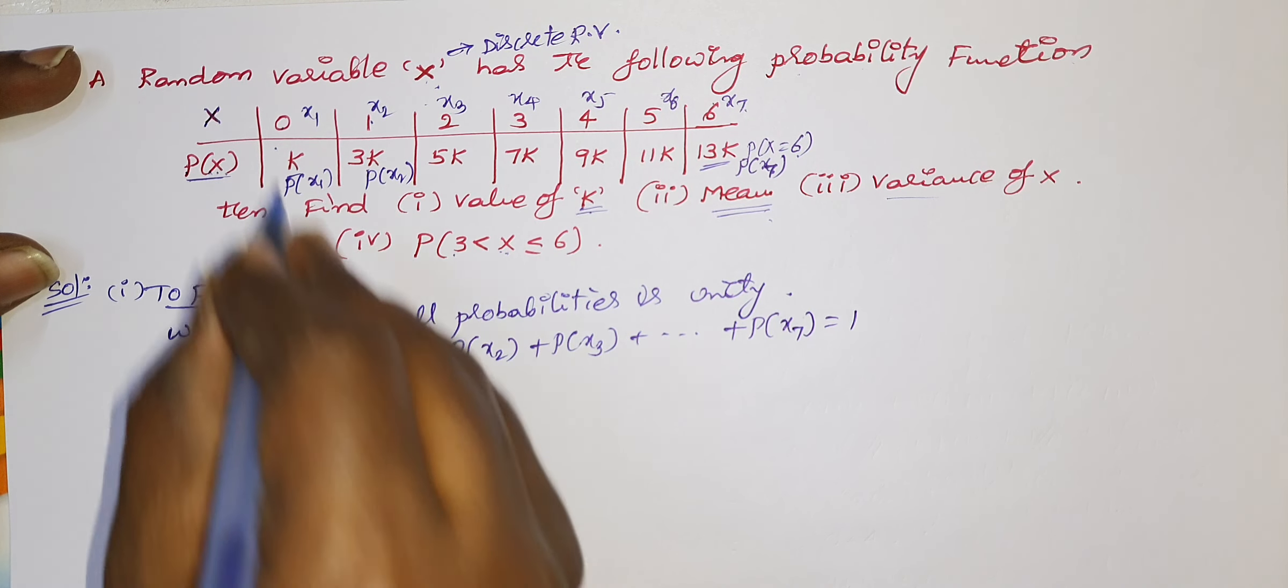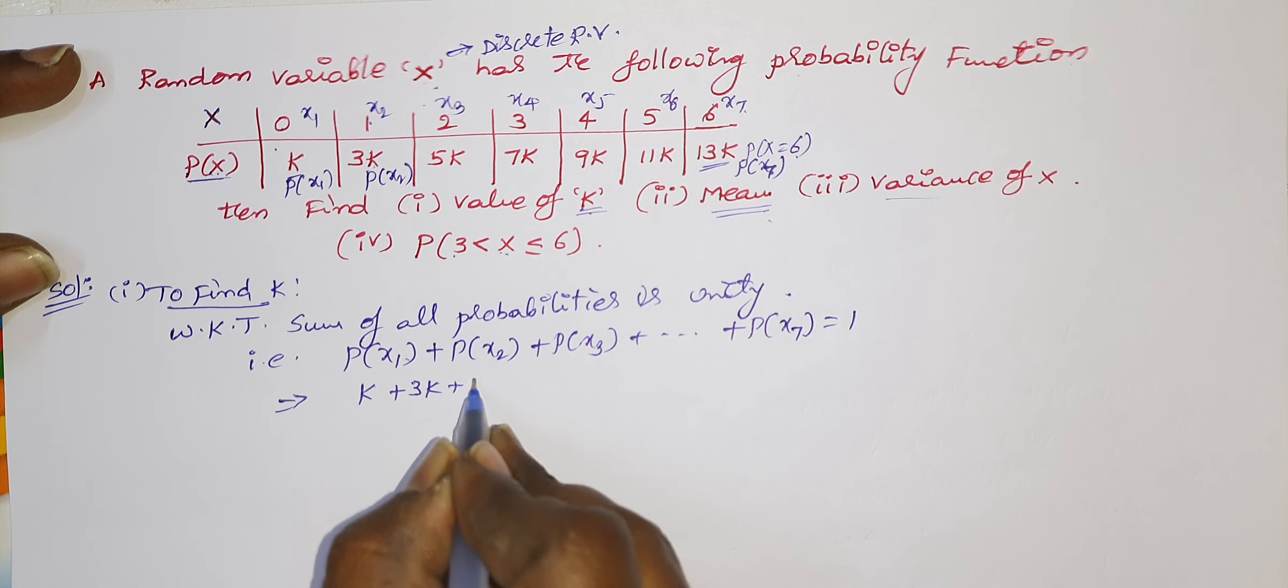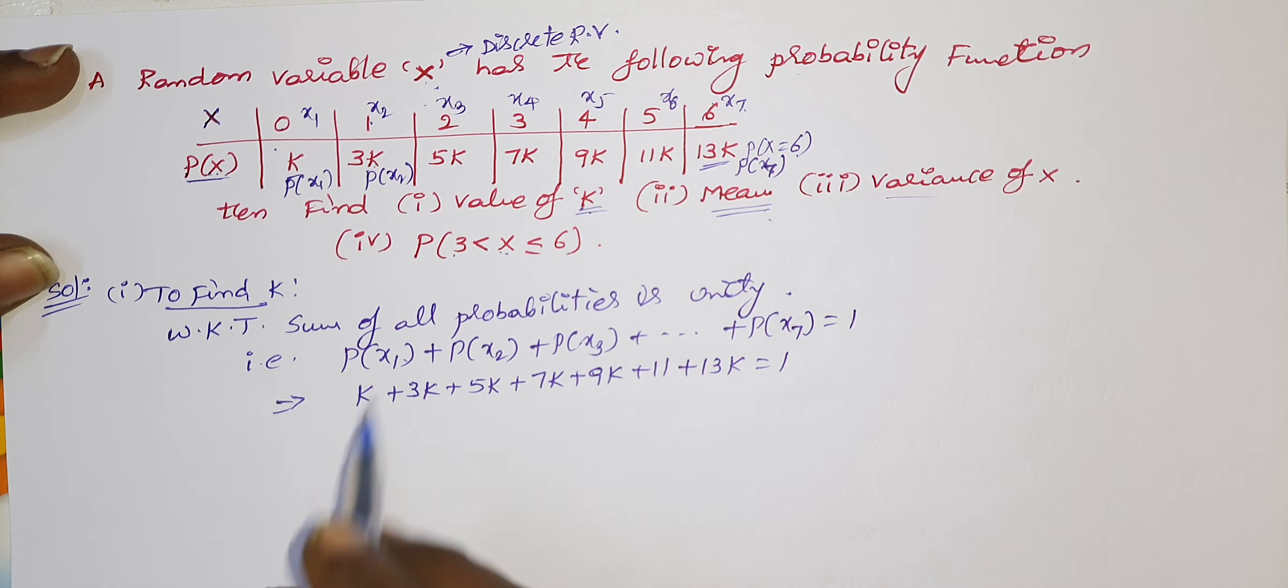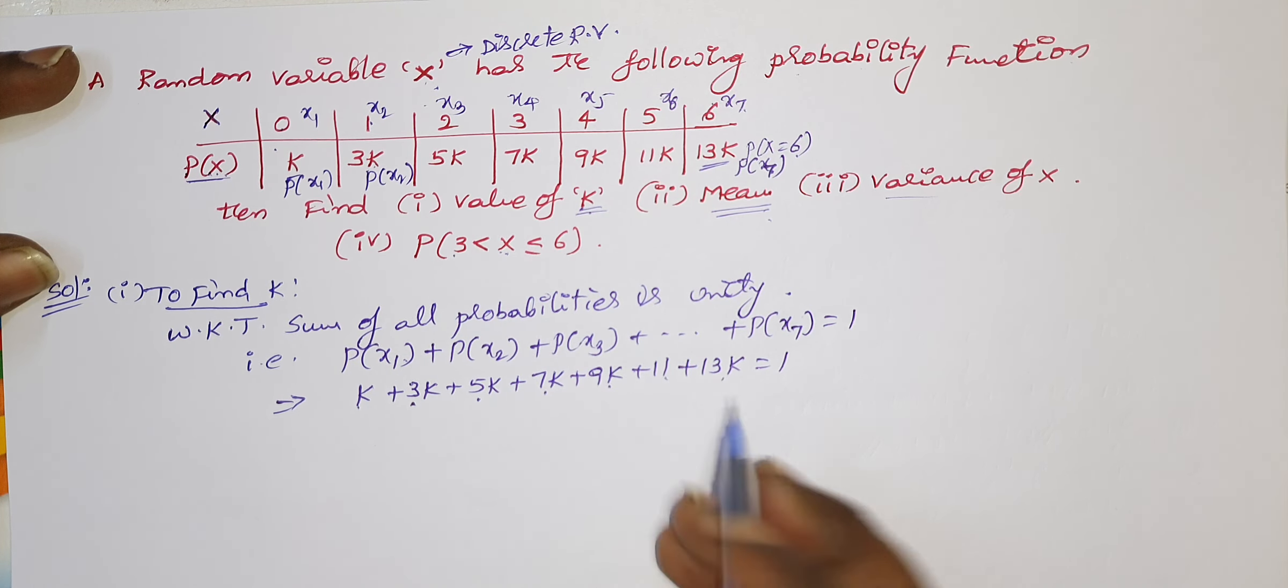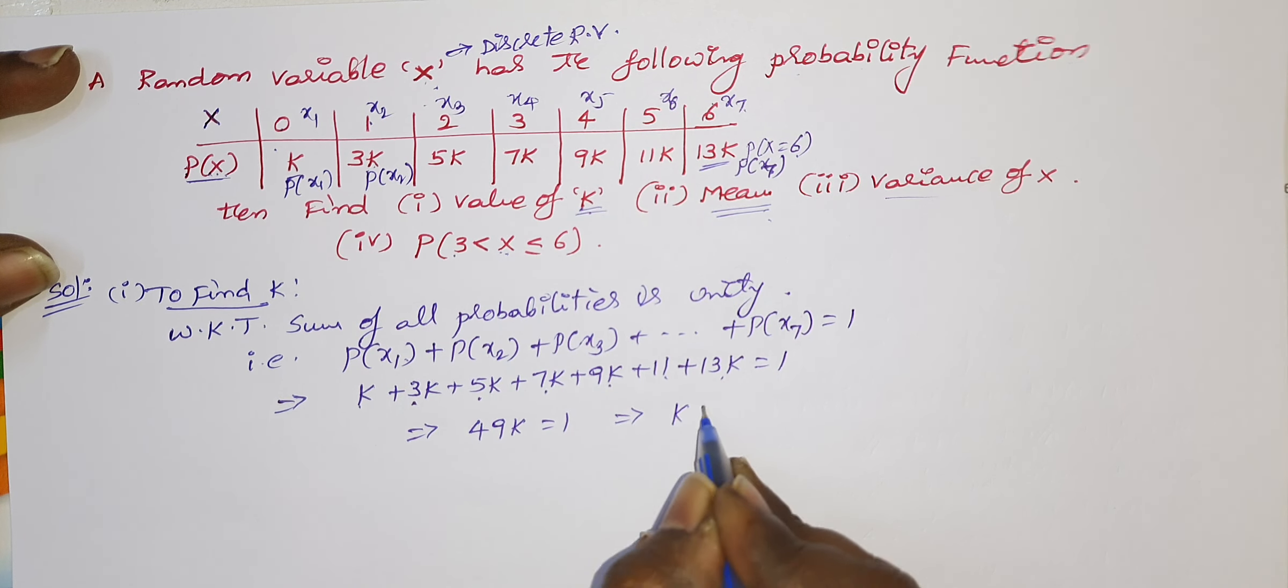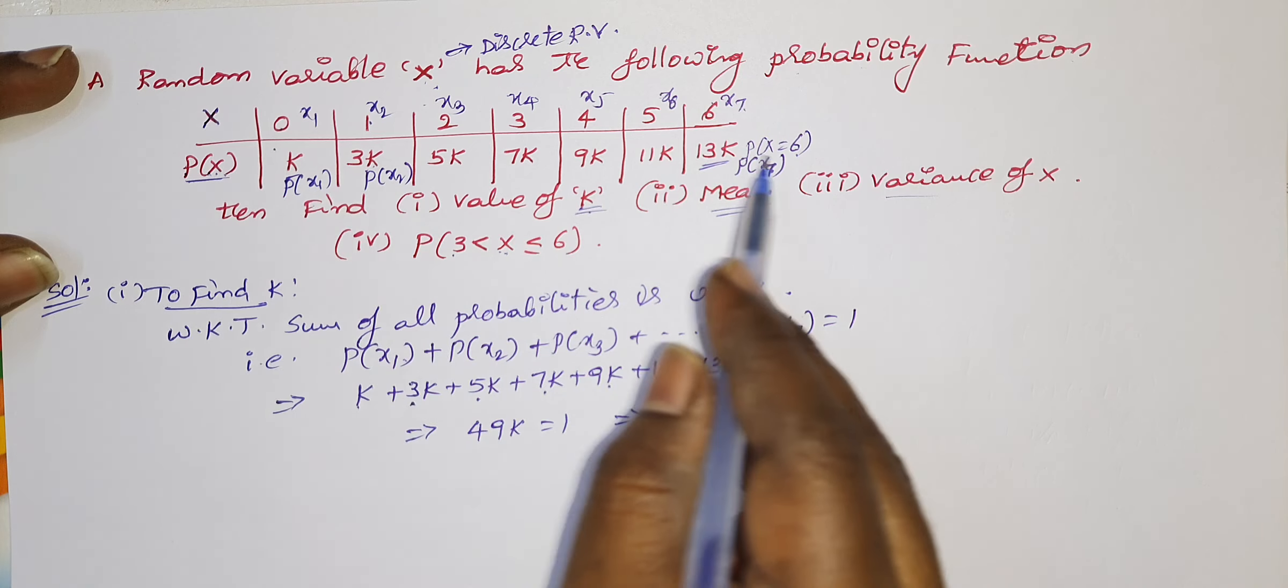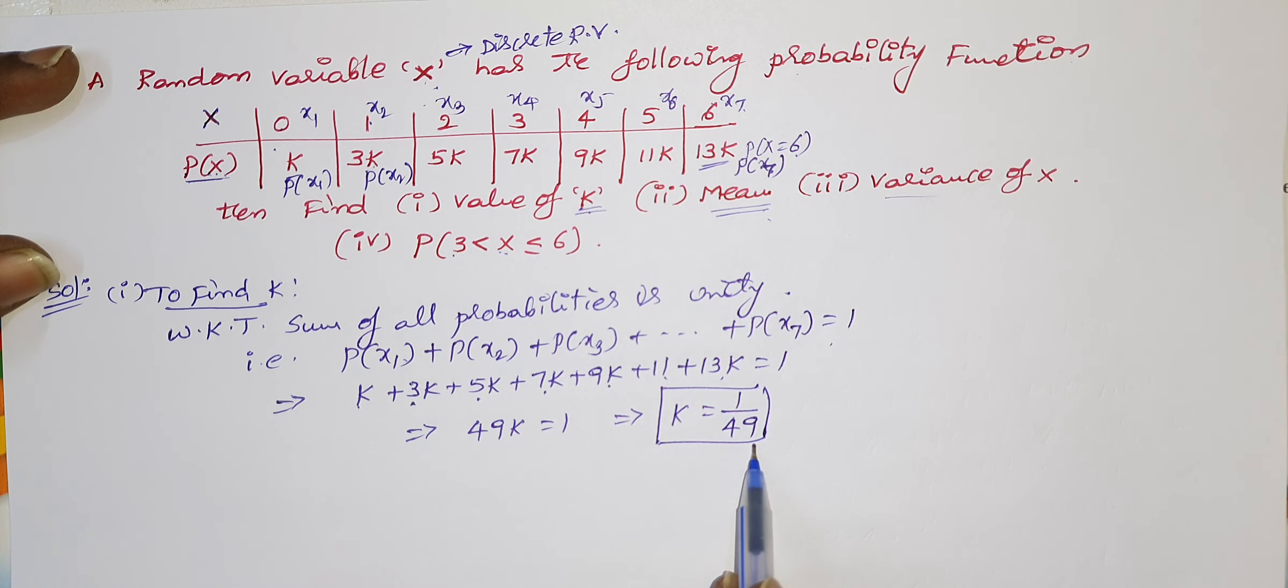So what is the probability of x1? k plus 3k plus 5k, 7k, 9k, 11k plus 13k is equal to 1. 1 plus 3 is 4, 4 plus 5 is 9, 16, 25, 36, 49. So I got 49k equals 1. From this, k value is 1 by 49. Very easy one. To get the unknown constant in probabilities, you can add all probabilities and equal to 1, automatically you will get the k value.